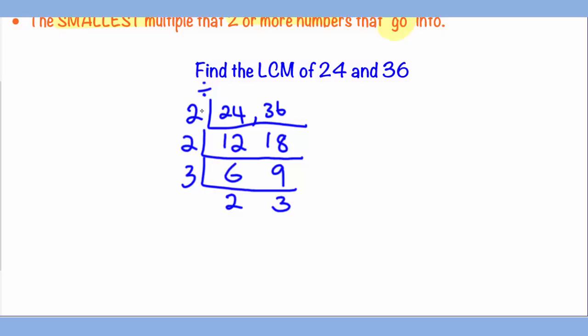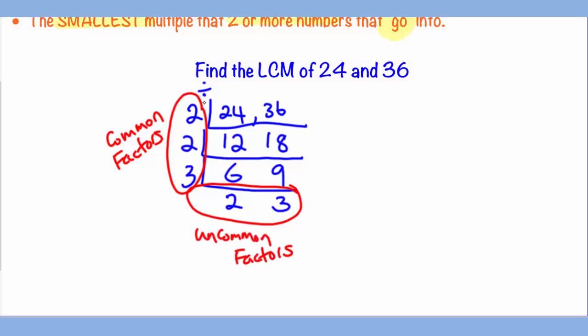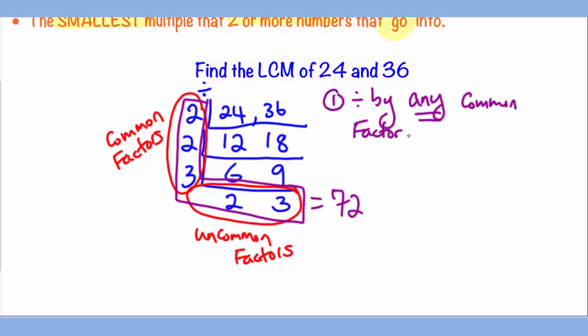The LCM will be the product of this times this, which we call the common factors, and this is the uncommon factor. It happens that they make an L shape, which gives you 72. To recap, you divide by a common factor of both numbers, and then you'll multiply the side numbers together, which are the common factors and uncommon factors.